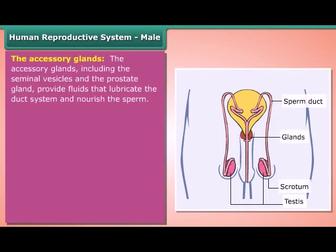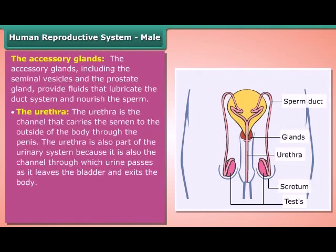The accessory glands, including the seminal vesicles and the prostate gland, provide fluids that lubricate the duct system and nourish the sperm. The urethra is the channel that carries the semen to the outside of the body through the penis. It is also part of the urinary system, as it is the channel through which urine passes as it leaves the bladder and exits the body.